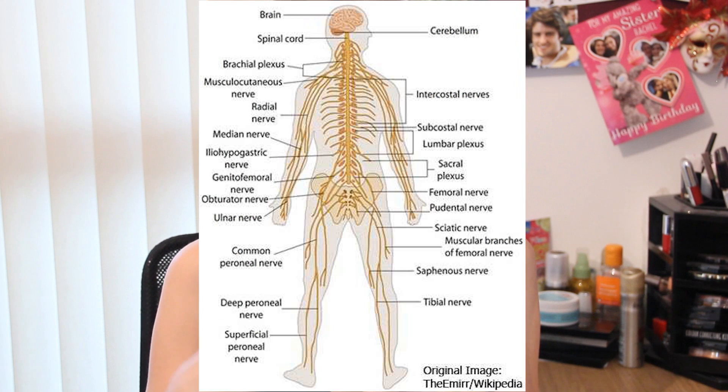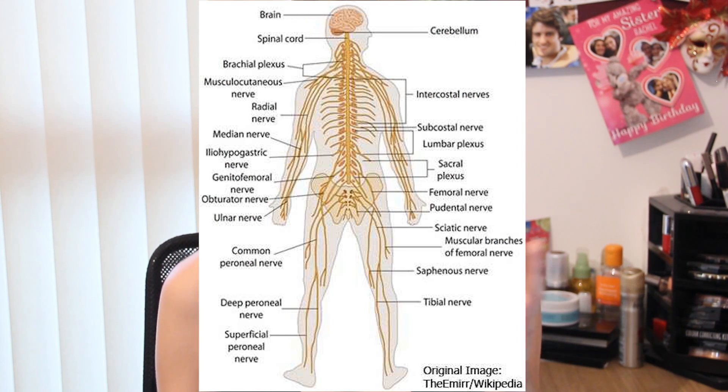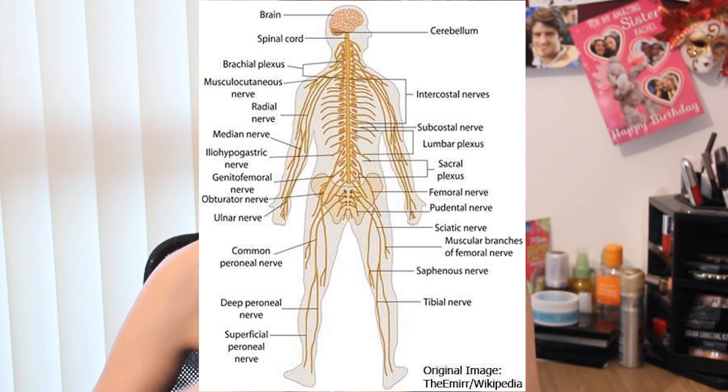The nervous system is this complex network of nerves and cells that transmit signals around the body. It works throughout your whole body, right to your fingertips, your toes. It's not just the brain and what's going on in your head. The nervous system is split up into different systems and subsystems.